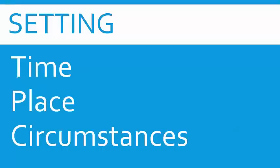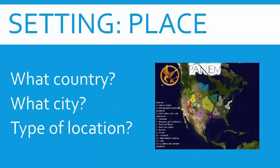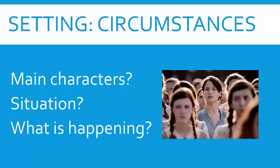Then we have the setting. We're going to look at time, place, and circumstances. In the Hunger Games, think about: what year is it, what time of the year is it, and what time of the day is it? Thinking about place — think about the country, the city, and the type of location. Finally, consider the circumstances: what's happening to the main characters, what kinds of situations are they encountering, and what is happening overall? All of these things — time, place, and circumstances — can affect the setting.